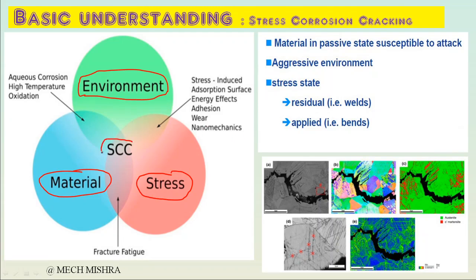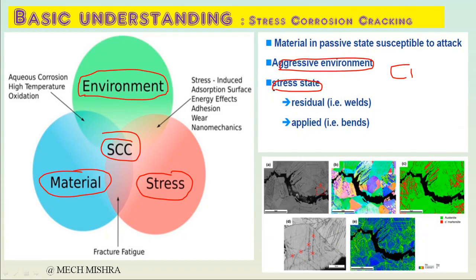Basically, three factors are responsible for stress corrosion cracking: material in a passive state susceptible to attack, an aggressive environment - in chloride SCC the chloride environment is aggressive - and stresses. Stresses may be due to fabrication or due to the in-service position. All stresses are tensile stresses - residual stresses are present in welding and will always be present in our plant, while applied stresses come from bending loads.